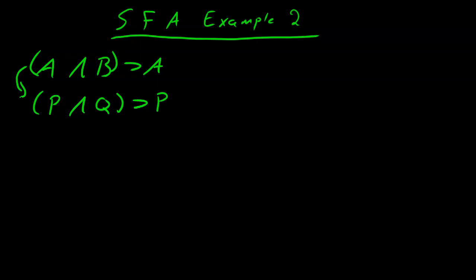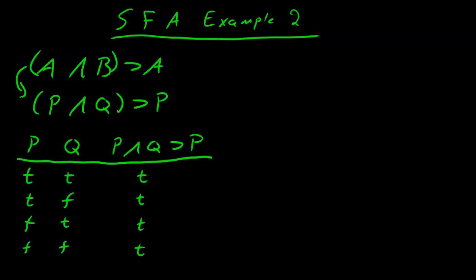Then we can draw a truth table for this new formula. We see from the truth table that the formula P and Q implies P is valid.